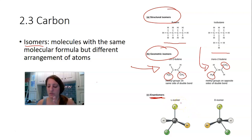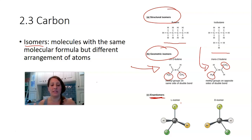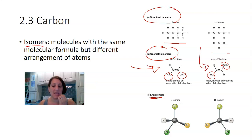For example, there's a drug called DOPA used to treat Parkinson's disease. When made synthetically, it results in two mirror images — two enantiomers — called L-DOPA and D-DOPA. Both are made, but only one of them is biologically active. The other doesn't do anything if given to a person with Parkinson's. So only one form of DOPA actually works, which has to be kept in mind during synthetic production.